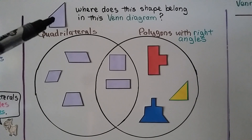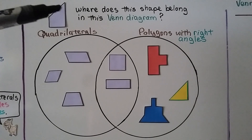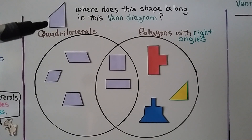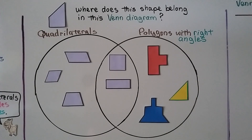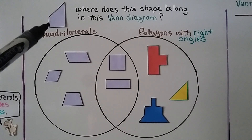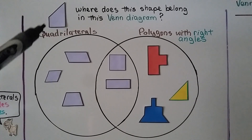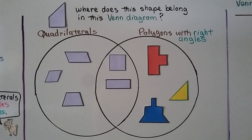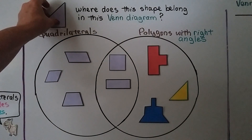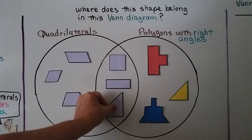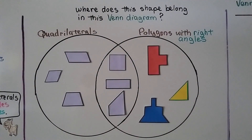So where would this shape fit in the Venn Diagram? It has four sides, so it is a quadrilateral with four angles. Does it have right angles? Yes, it does in these two corners. So it's a polygon with right angles and it's a quadrilateral — it's both. We can fit this shape into the overlapping area. That's where it belongs; it shares the traits of both circles.